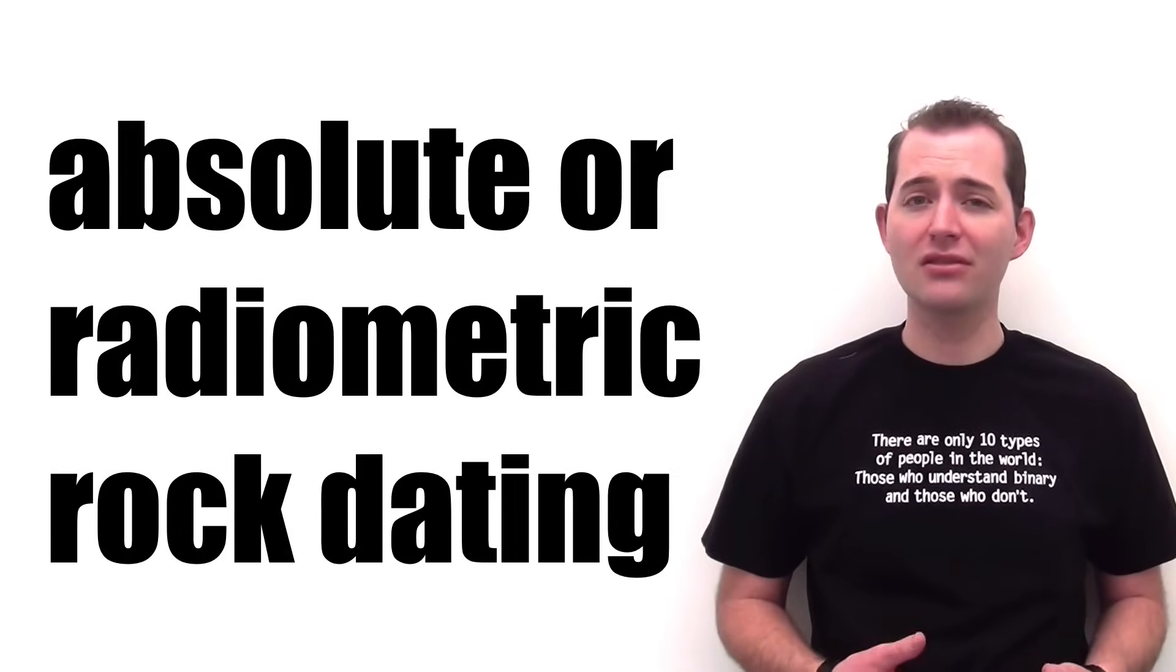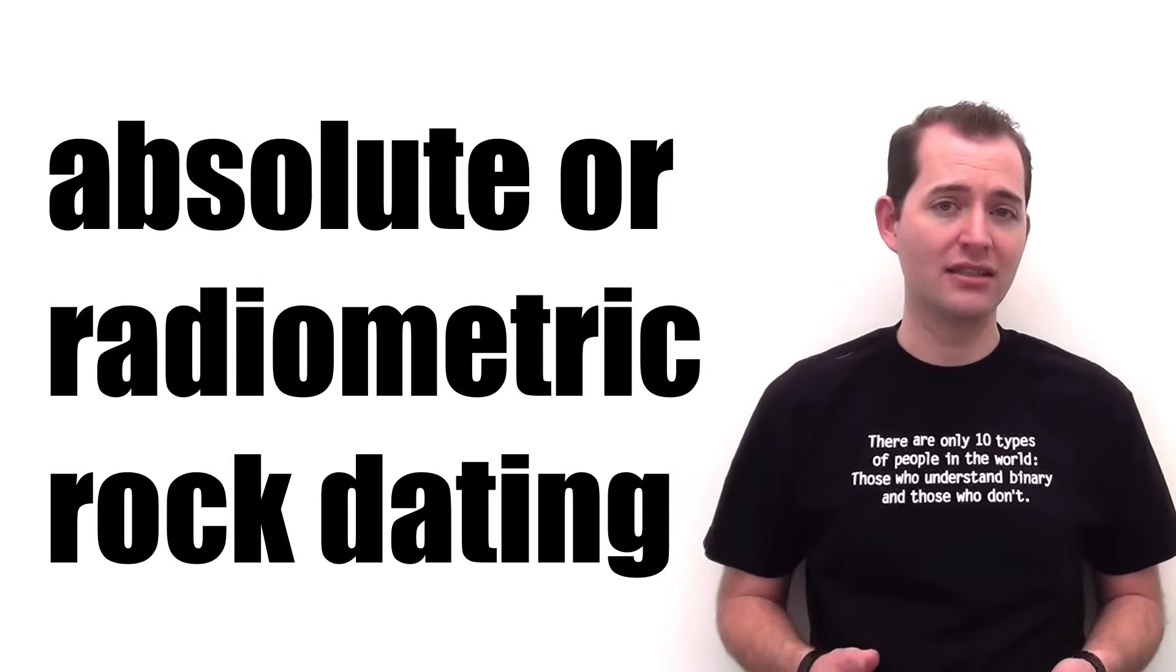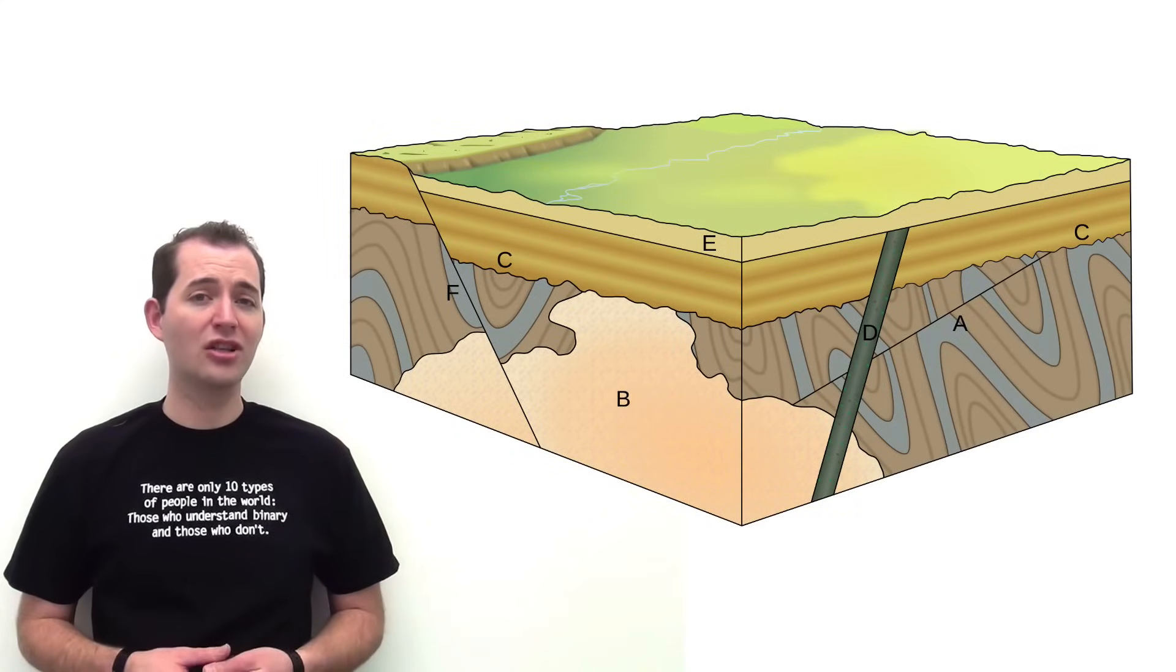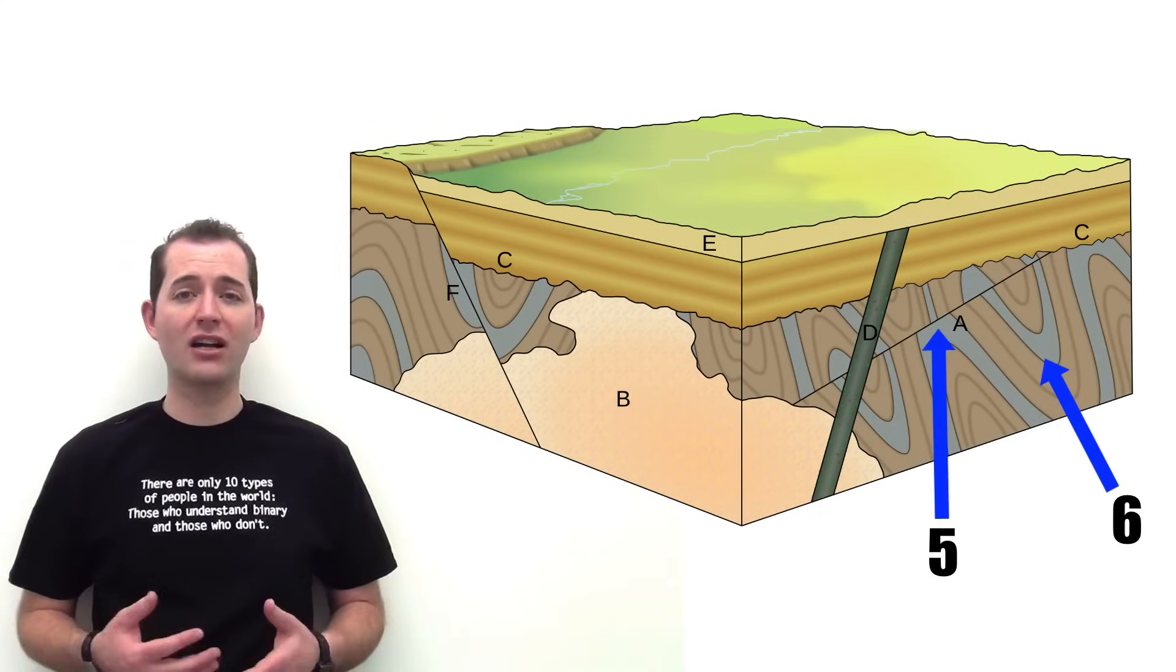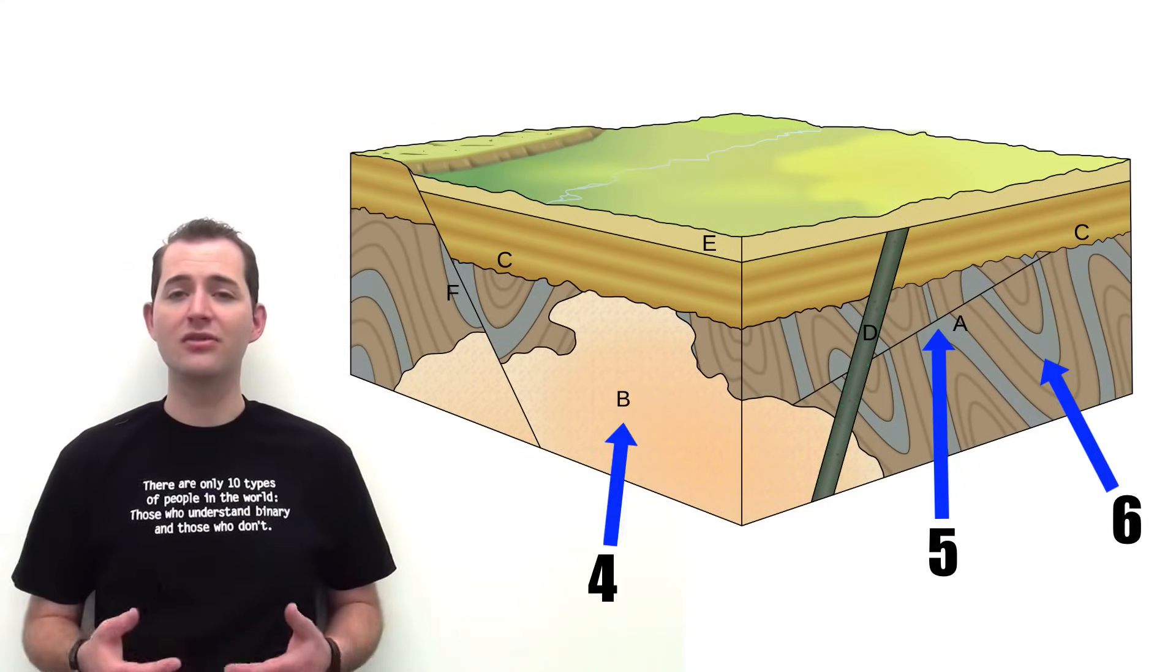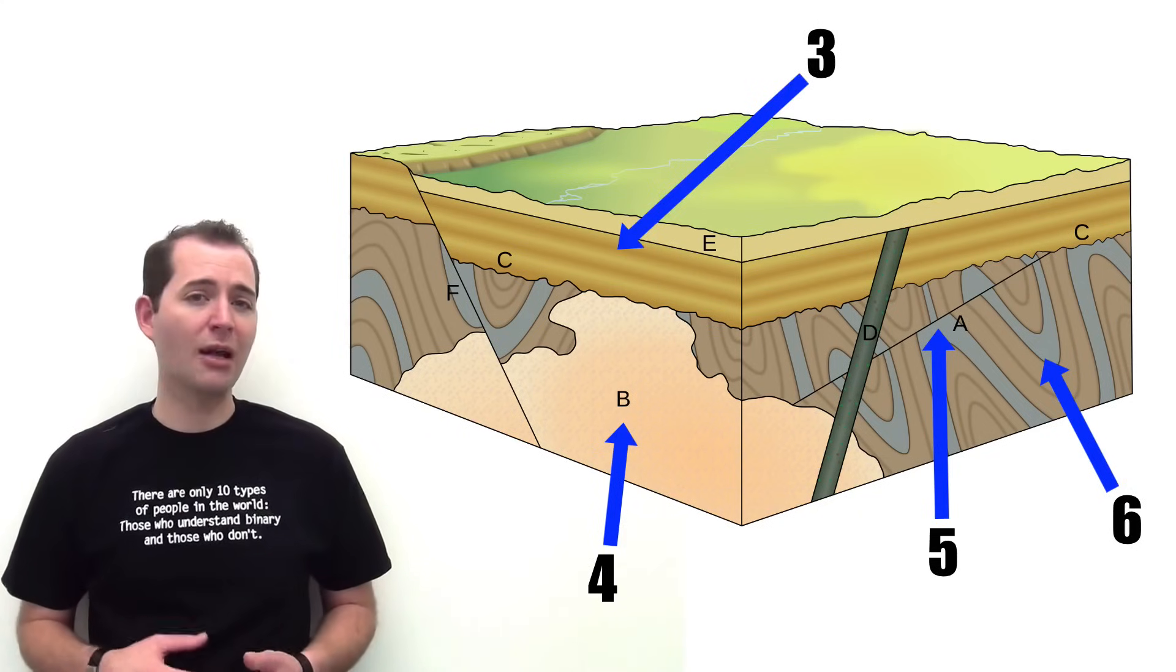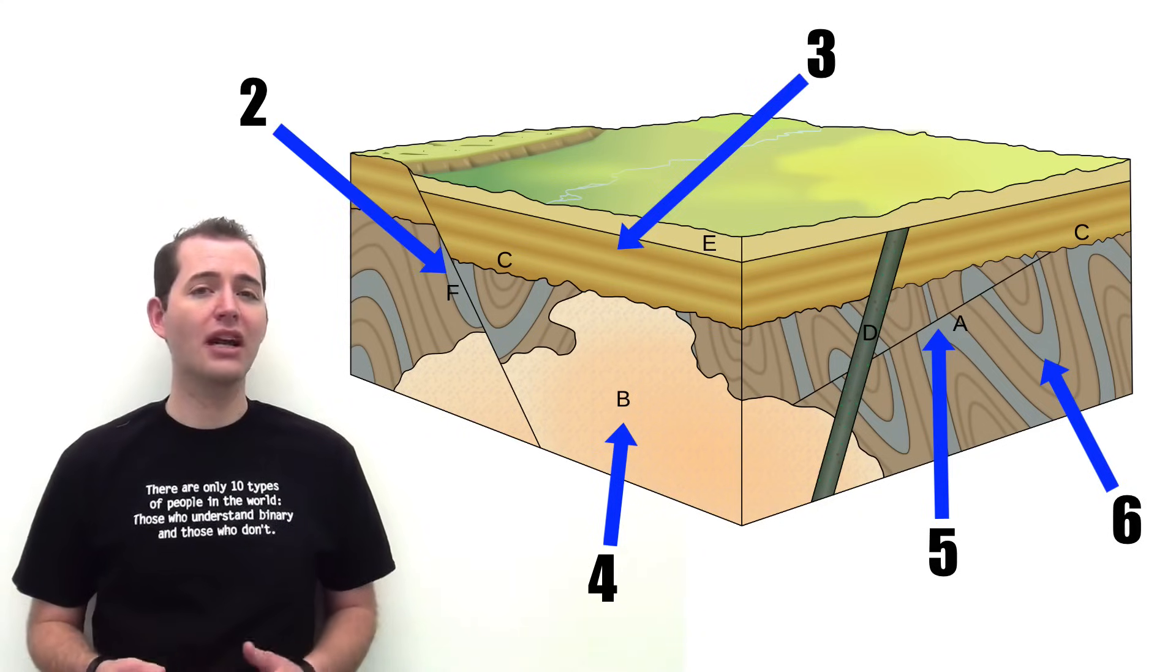Determining an exact age of a rock is what's known as absolute or radiometric rock dating. We use relative rock dating laws to determine the relative ages of rock layers or features to each other. Again, we're only able to determine what is older and what is younger.